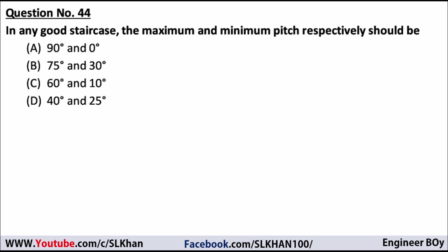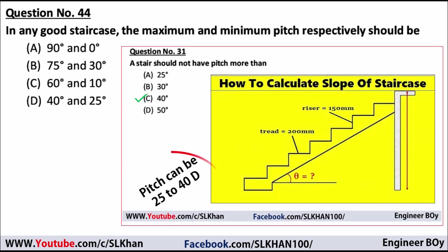Question 44: in any good staircase, the maximum and minimum pitch respectively should be — this was answered in a previous video but the answer is option D: 40 degrees maximum and 25 degrees minimum for the pitch of a staircase.